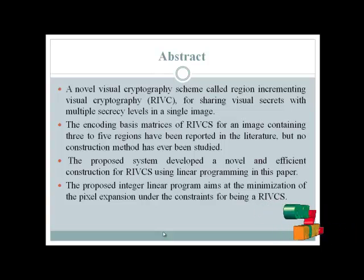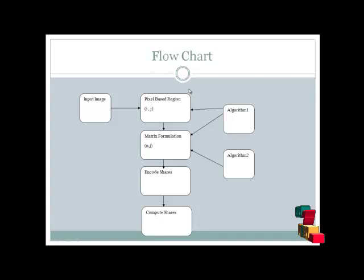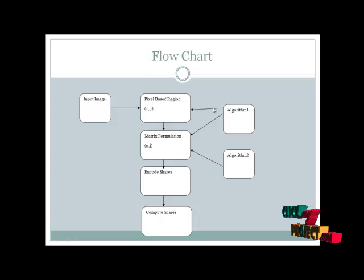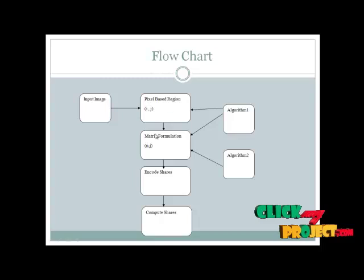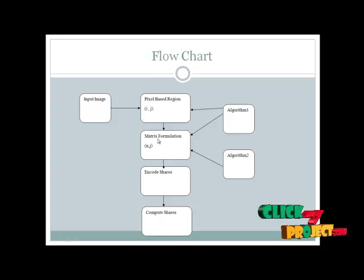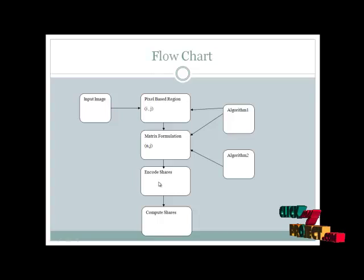Let us see the diagram of the images. This is the flowchart of the diagram. The input images get the pixel-based region. The pixel-based region feeds into Algorithm 1 steps. The pixel-based region also generates the matrix formation, which feeds into both Algorithm 1 and Algorithm 2.